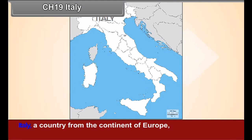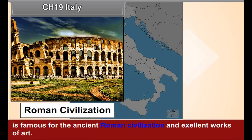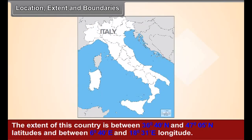Chapter 19: Italy. Italy is a country from the continent of Europe, famous for the ancient Roman civilization and excellent works of art. Location, extent and boundaries: the extent of this country is between 36 degrees 40 seconds north